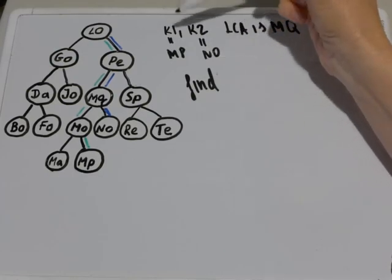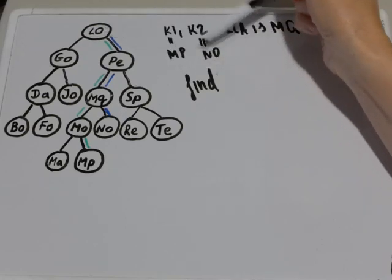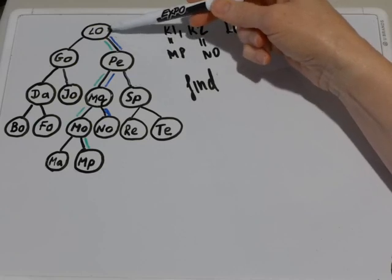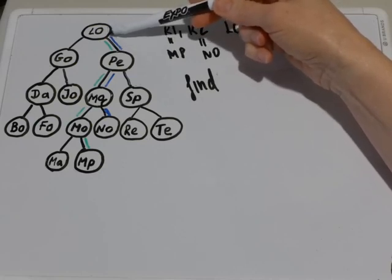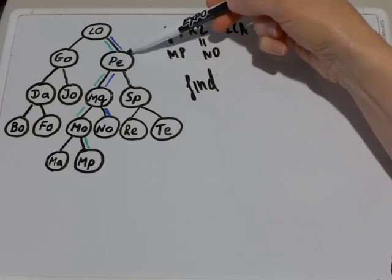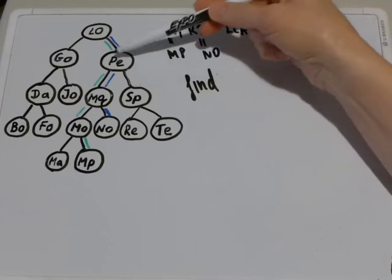For example, if we pass to this function K1 and K2, K1 MP and NO are greater than LO. That means LO is not lowest common ancestor. So we make a recursive call on the right child of LO. Then we compare both K1 and K2 with PE.